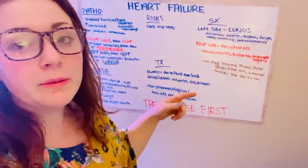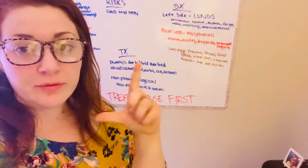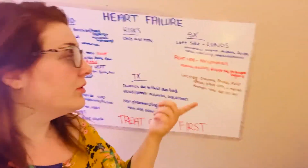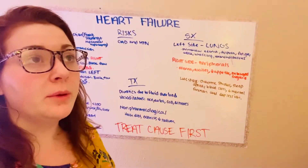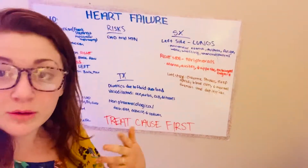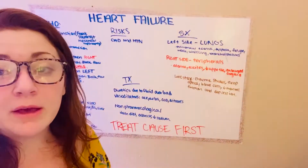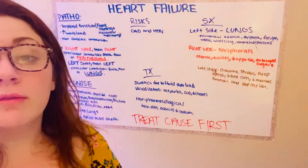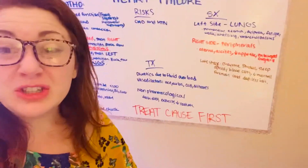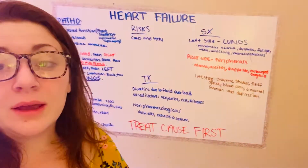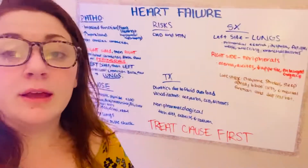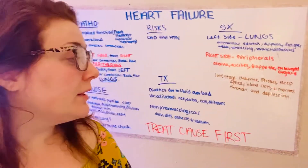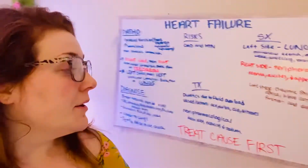For symptoms, remember left equals lungs. With left-sided heart failure you're going to see pulmonary edema, difficulty breathing, fatigue, weakness, wheezing, and bronchospasms. On the right side — which is the peripherals — patients will have edema, ascites (fluid accumulation in the stomach), decreased appetite, and enlarged organs. In late stage, they could have Cheyne-Stokes breathing, sleep apnea, blood clots, decreased mental function, and depression.